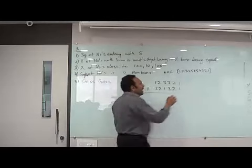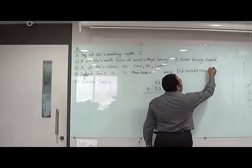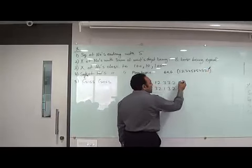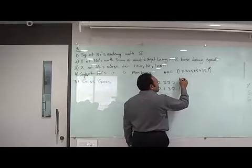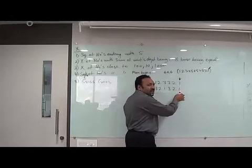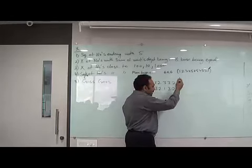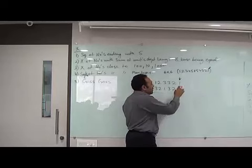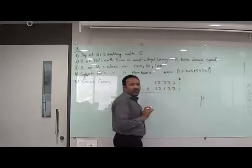We will start from the right side. Take 1 column at a time. First we will take 1 column. Multiply it with itself.